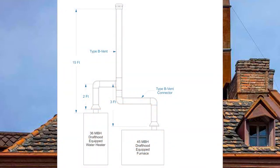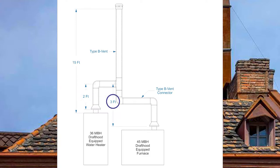The first example is two draft hood equipped appliances sharing a 15-foot common vent. We have a 36,000 BTU water heater with a two-foot vent connector rise and a 45,000 BTU furnace with a three-foot vent connector rise. Notice that we have double wall vent connectors, which means we should be using table C3.